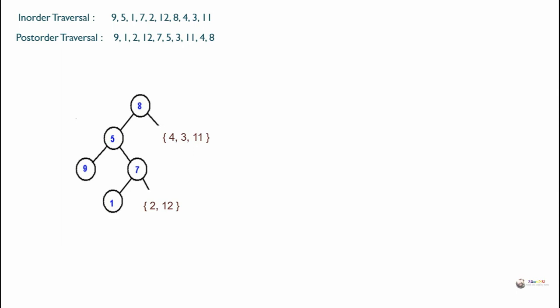Now out of 2 and 12, which one is coming first from the end of post-order traversal? Looking at the post-order traversal, we can see that 12 is coming first. So the root will become 12, and 2 is on the left of 12 in in-order traversal. So it can be rewritten as 12 as root and 2 on the left of 12.